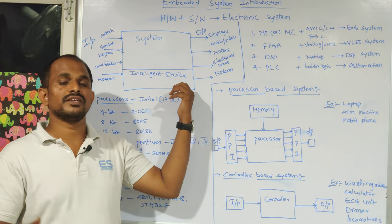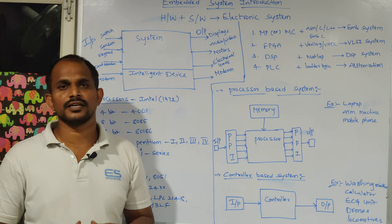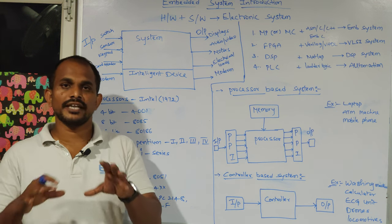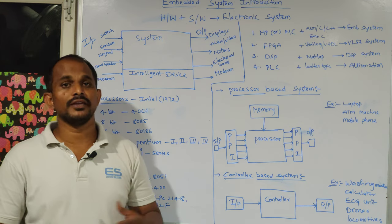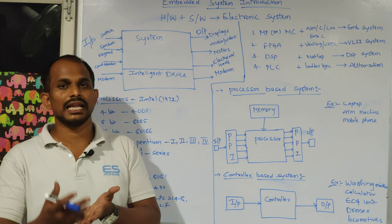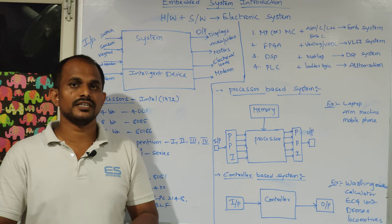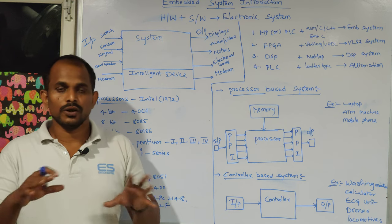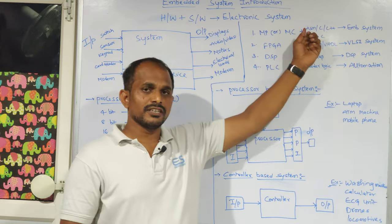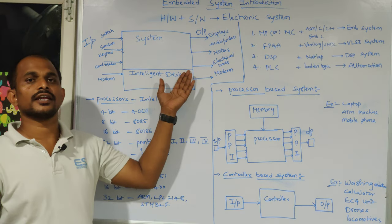When you design an electronic system, every system has additional hardware. If you open a computer motherboard you find many ICs, resistors, capacitors, and inductors — but the most important device is the processor, which handles operating system execution and programs developed in C language. Every electronic system is a combination of hardware and software. When you use microprocessors or microcontrollers with C or embedded C to develop a program, that system is called an embedded system.